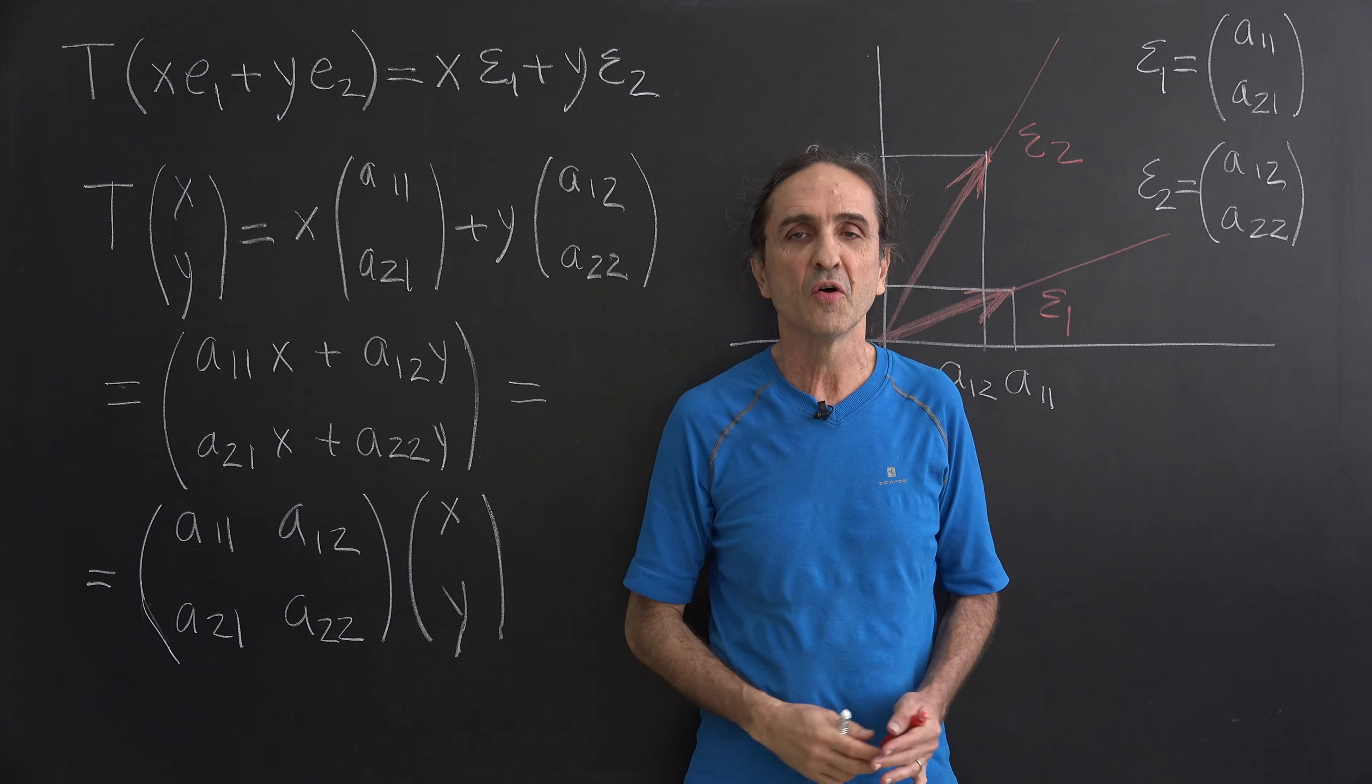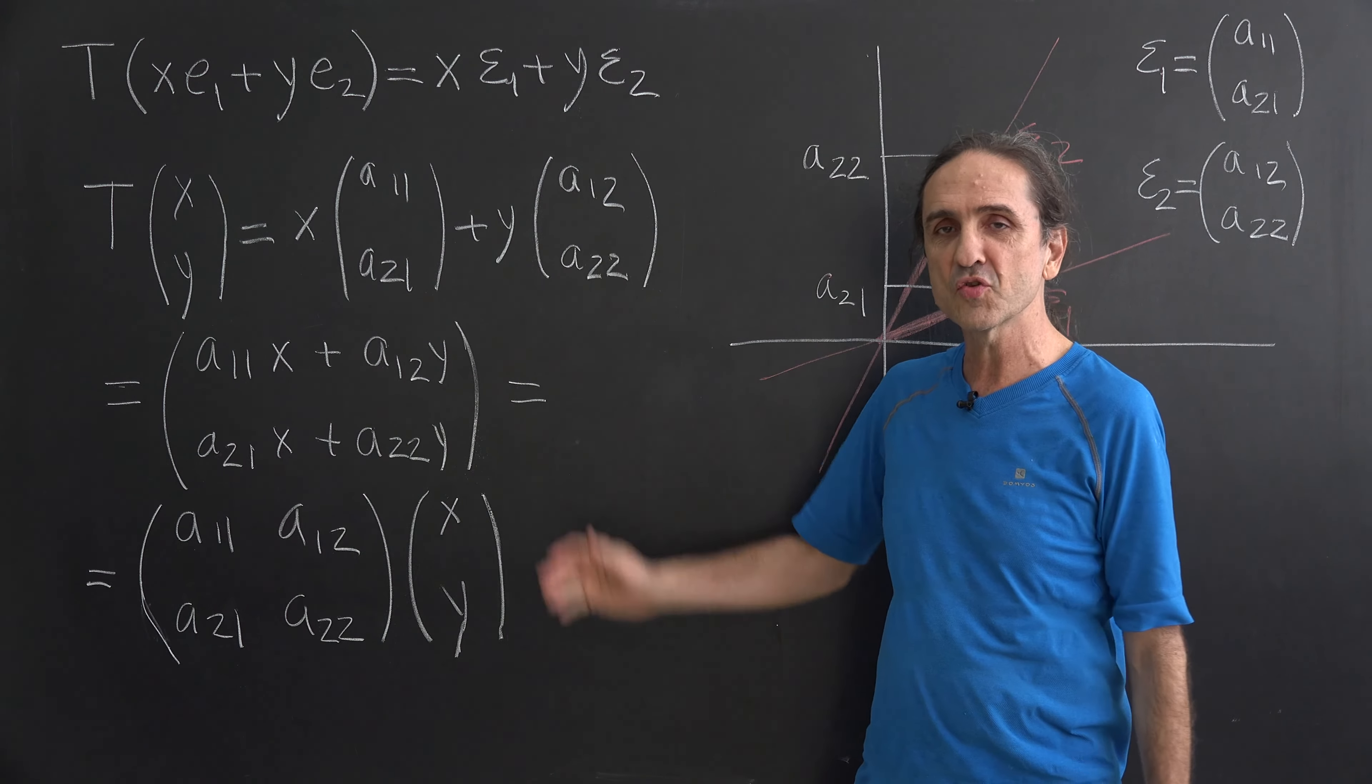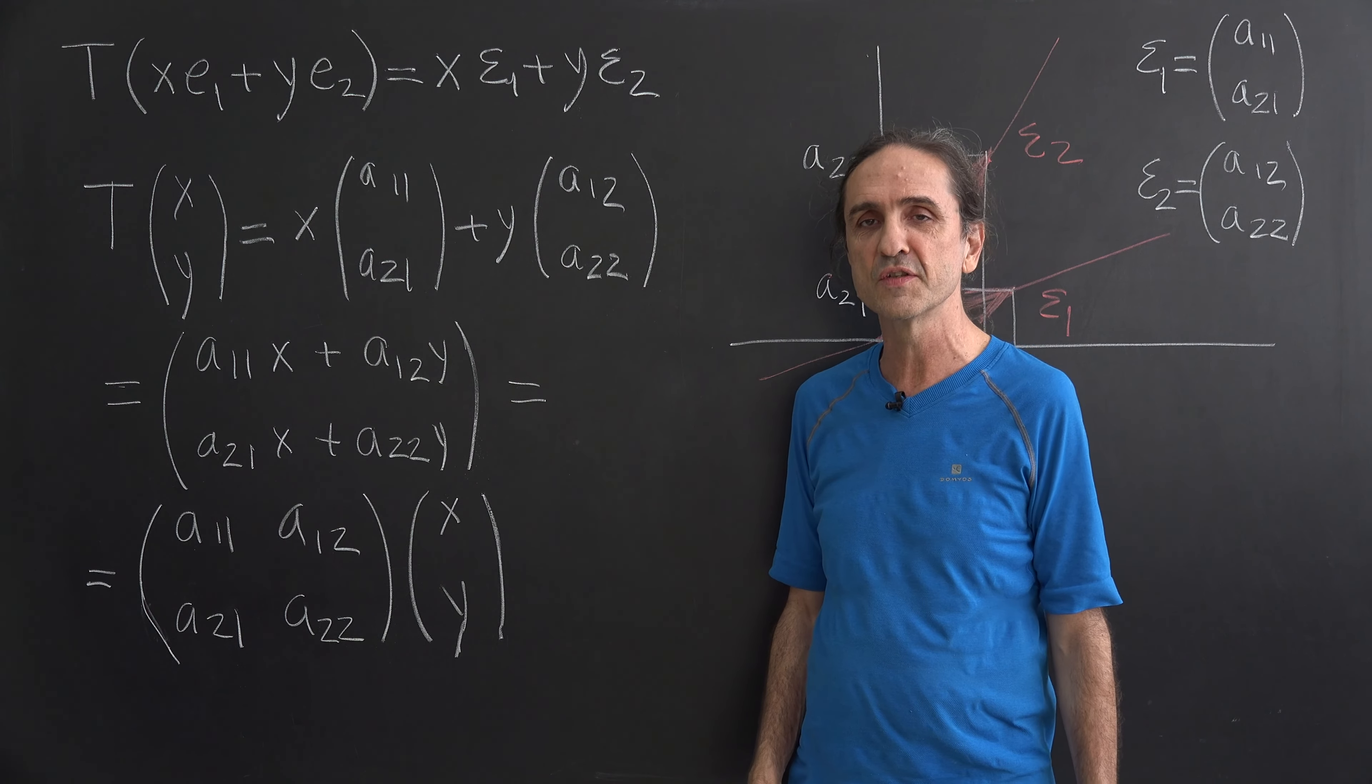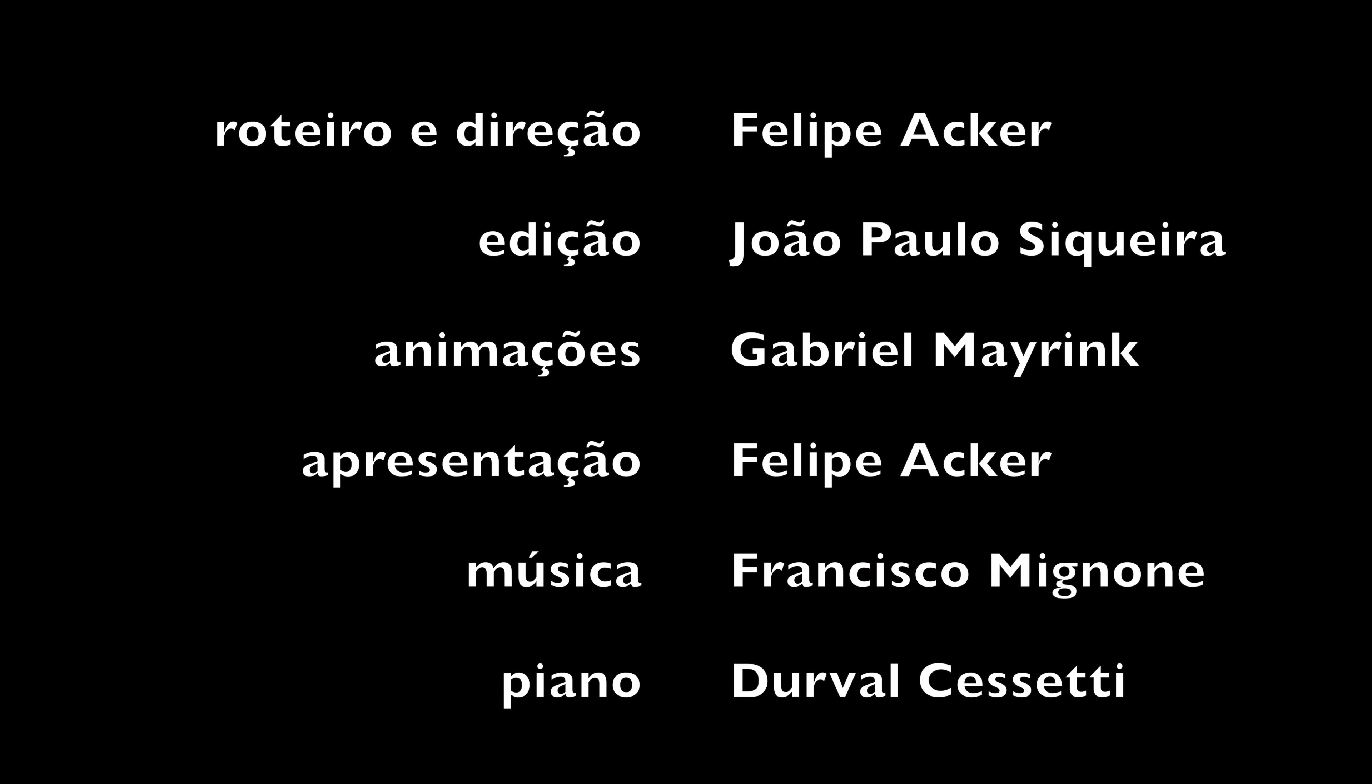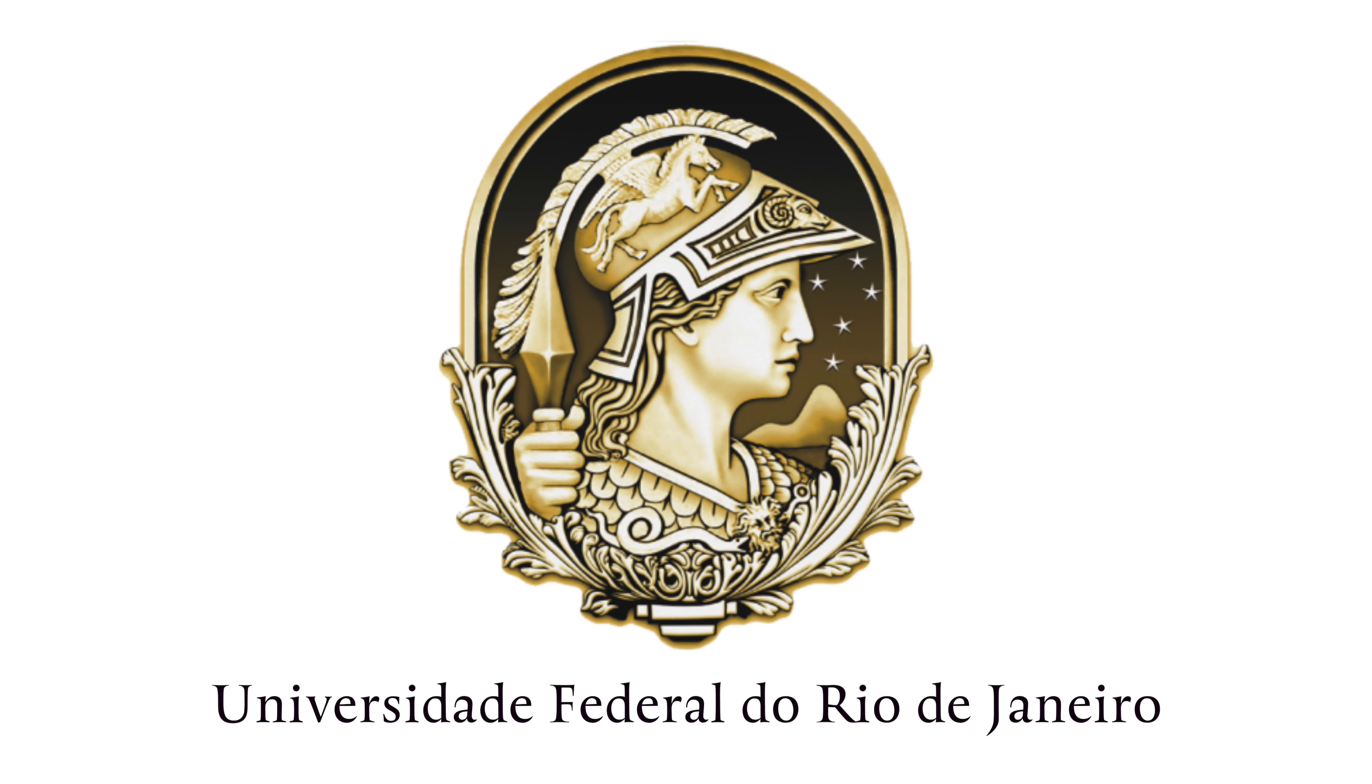Isso significa, então, que se a gente conhece as coordenadas de Y1 e de Y2, a gente conhece as coordenadas de T de X e Y.